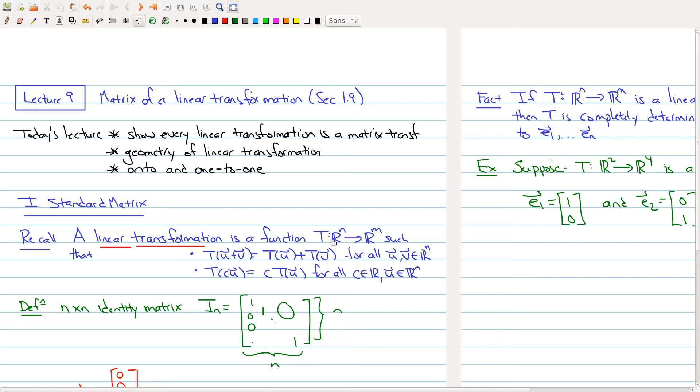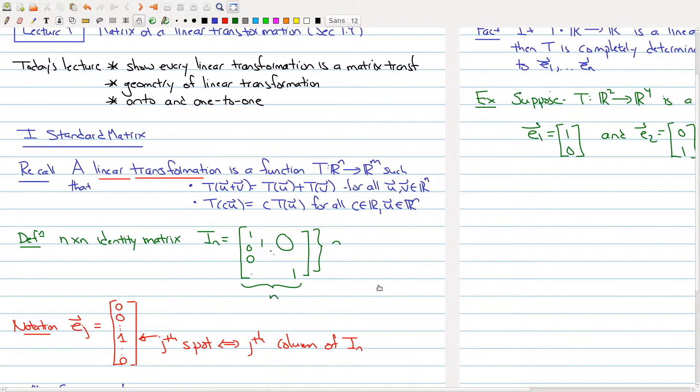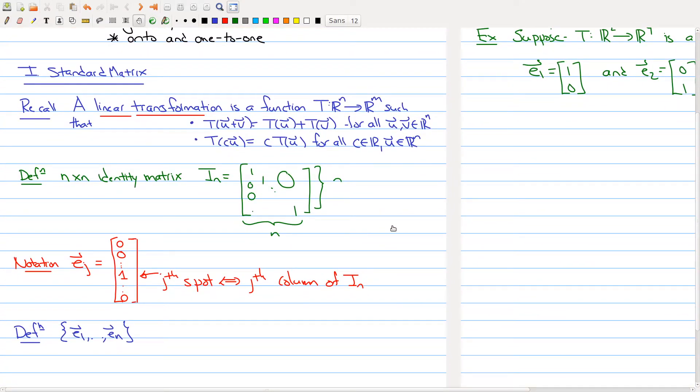In order to show that any linear transformation can be viewed as a matrix transformation, we need some new terminology here. The first piece of terminology is the identity matrix. The identity matrix is an important matrix that appears numerous times in this course, and the definition is quite simple. You have an n by n matrix, a square matrix. You have ones down the diagonal and you have zero everywhere else.